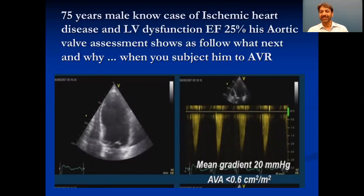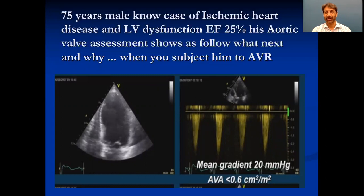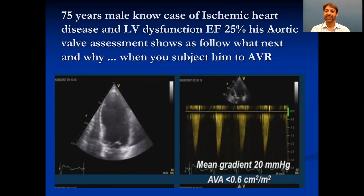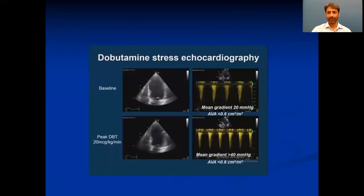Or it may be that the obstruction is so severe and the heart is failing that it's unable to overcome that obstruction and unable to generate enough force to create gradient. So in such a situation — which is a low flow, low gradient AS, a common term used for this — you have to decide: is this true significant severe AS or false AS? And if it's true AS, what is the contractile reserve?